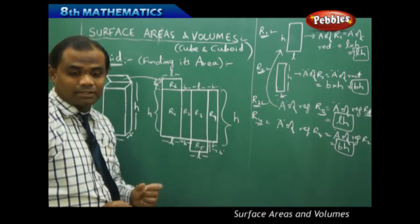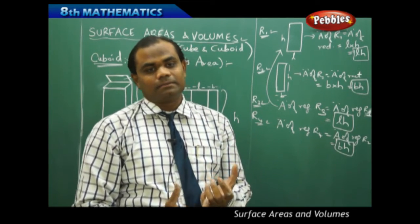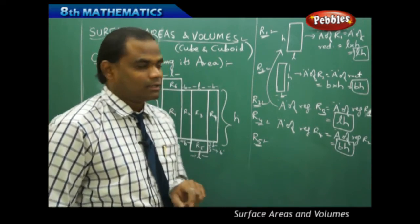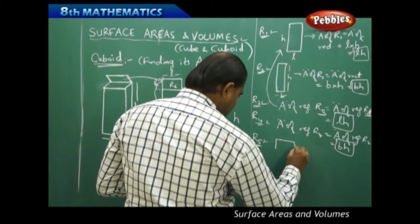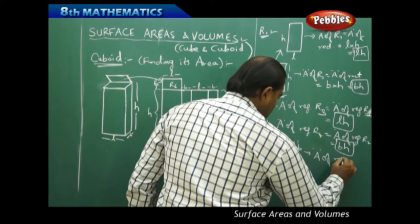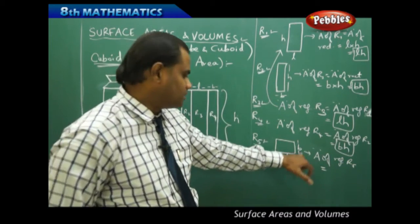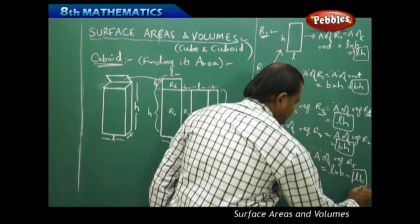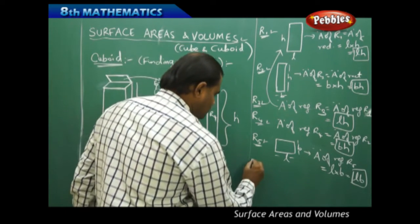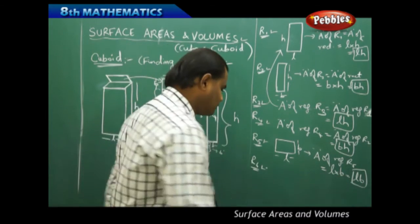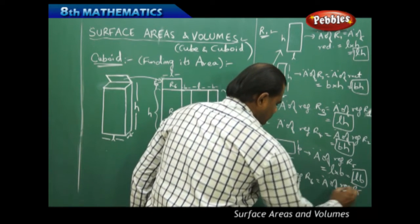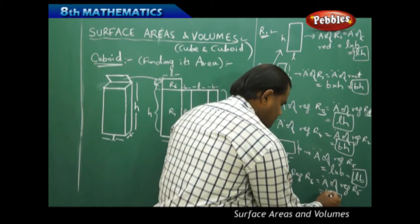Area of region R5 equals area of region R6 because the upper and lower faces of the box are similar. Region R5 is a rectangle with dimensions L and B, so the area of R5 is L times B, which is LB. Therefore, area of R6 is also LB.